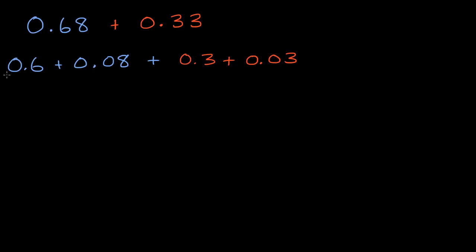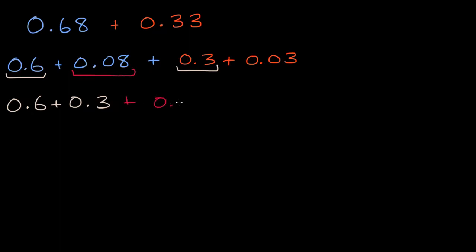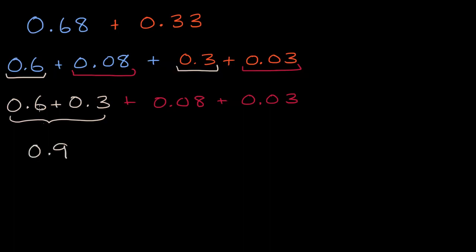So if I add the six-tenths and the three-tenths, those are the tenths. And then separately I'm going to add the hundredths: eight-hundredths plus three-hundredths. Six-tenths plus three-tenths — that's hopefully pretty straightforward by this point; if not, I encourage you to review some earlier videos. That's going to be nine-tenths. And eight-hundredths plus three-hundredths: if I have eight of something and add three, that's eleven of that something — eleven-hundredths.